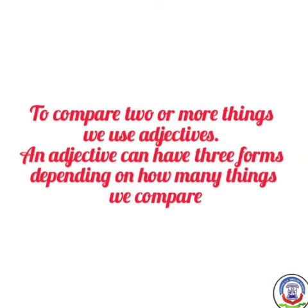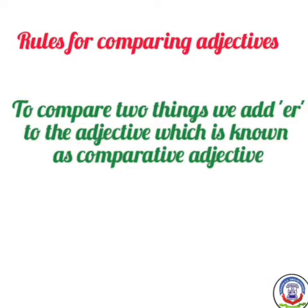To compare two or more things, we use adjectives. An adjective can have three forms, depending on how many things we compare. Rules for comparing adjectives: to compare two things, we add -er to the adjective, which is known as the comparative adjective.